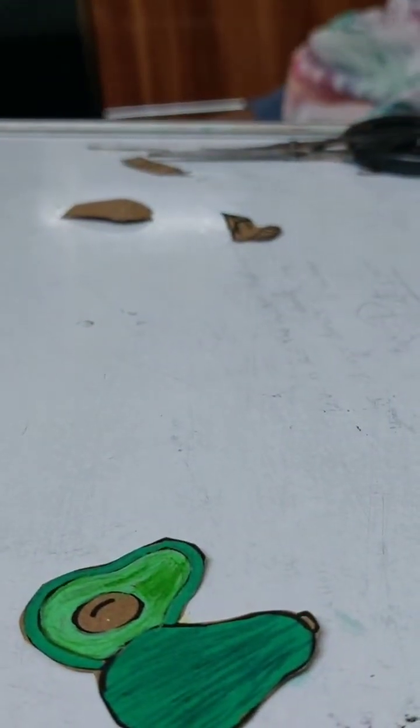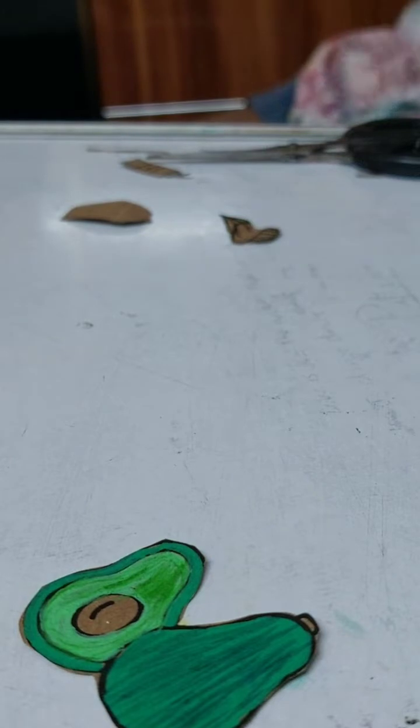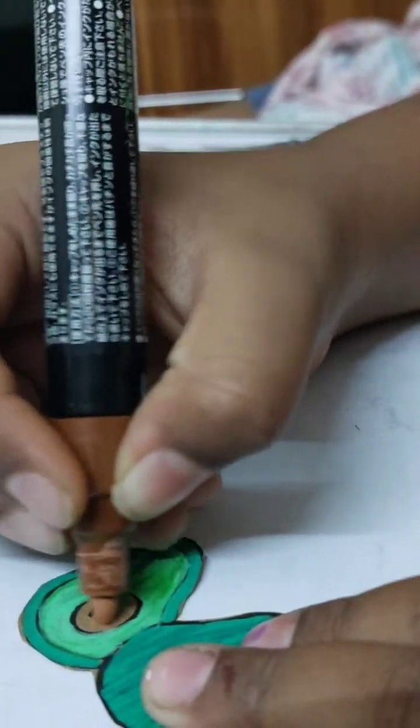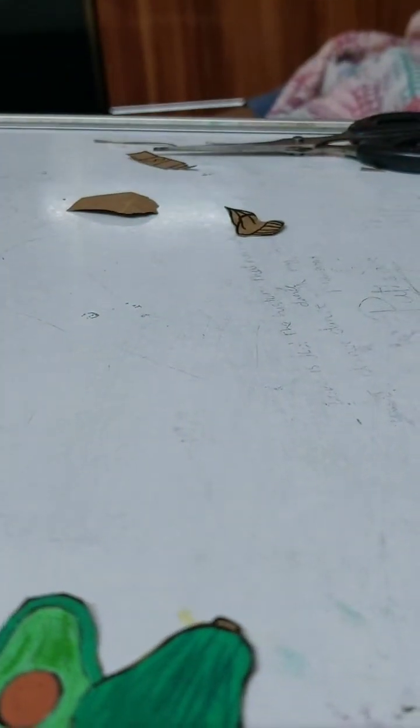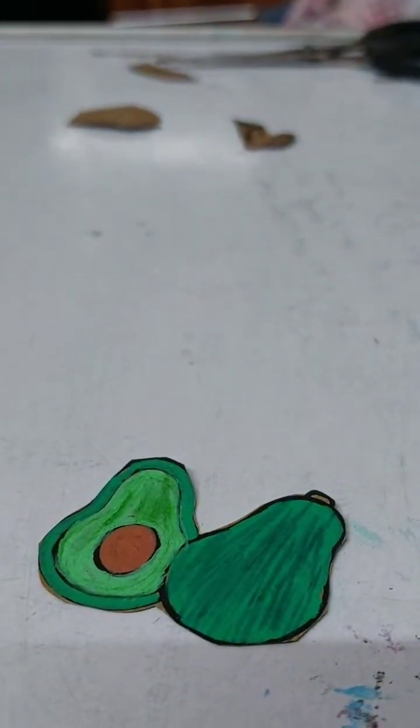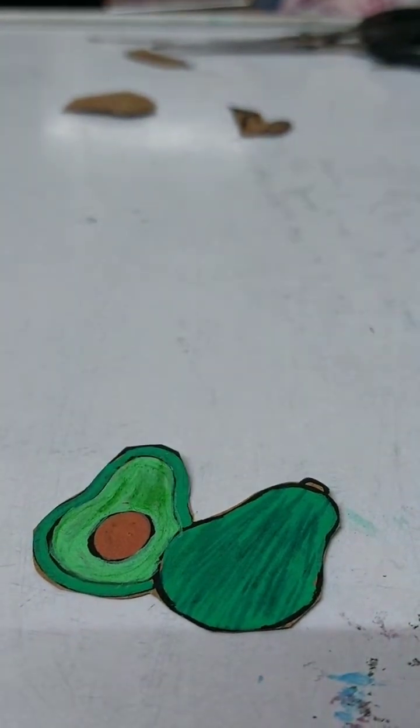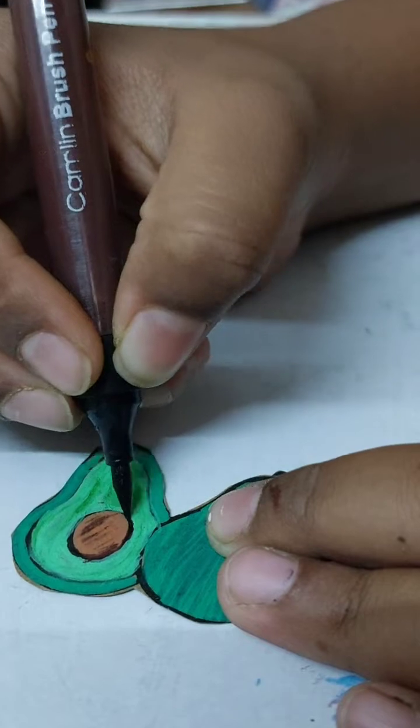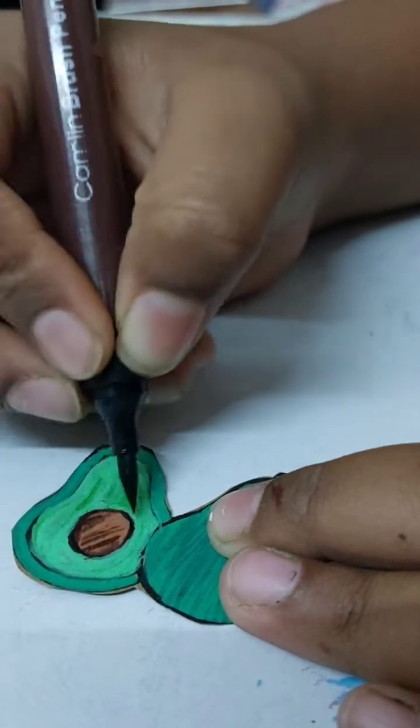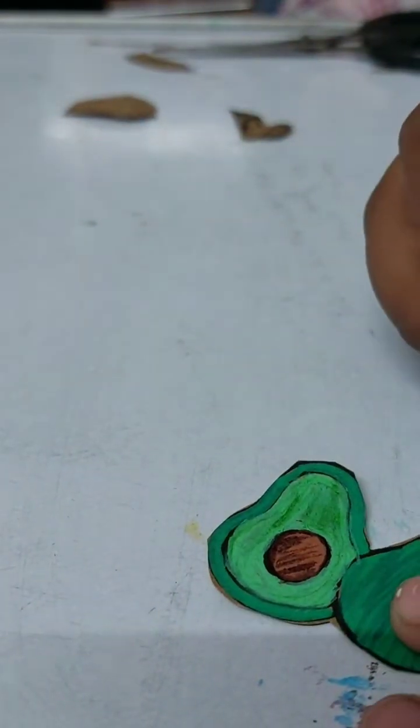It looks really good. Now we will use brown posca marker. Activate. It looks realistic. I will add a little detail on the brown brush. And we will add something.